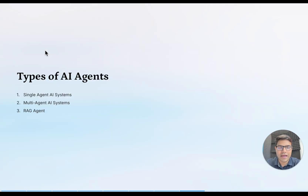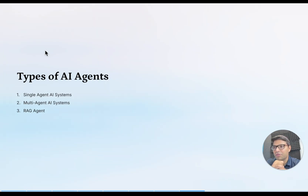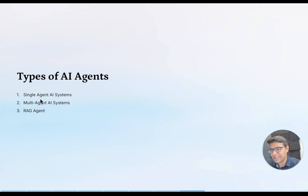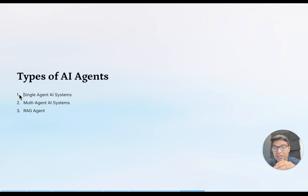Let's talk about the different types of AI agents. There are three main types: single agent AI system, multi-agent AI system, and RAG agent — which stands for Retrieval Augmented Generation. While some platforms list eight or twelve types, more or less all of them fall into these three categories. I'll give you an example of each so you can visualize what a single agent, multi-agent, and RAG AI agent looks like.